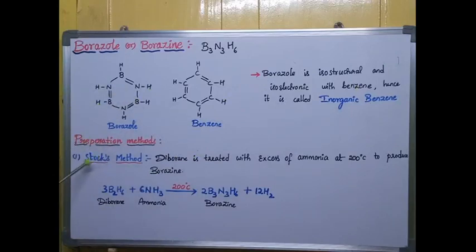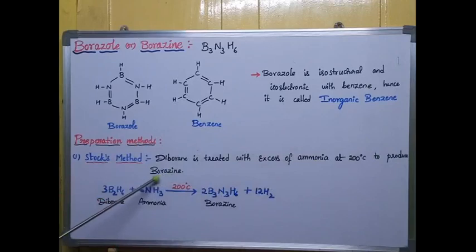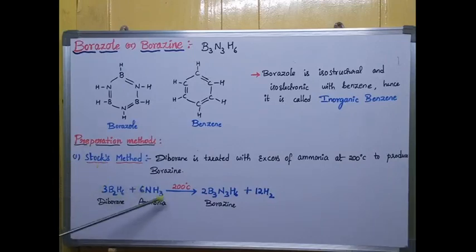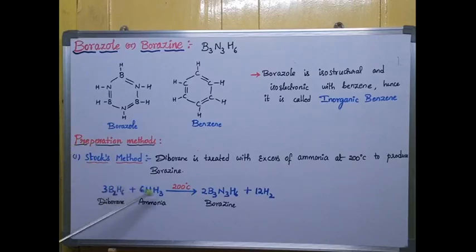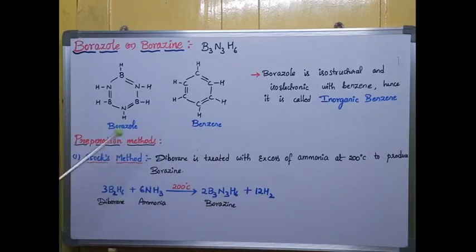Let us see the preparation methods. The first one is the Stock method. In Stock's method, diborane is treated with excess ammonia at 200 degrees centigrade to produce borazine. Three molecules of diborane react with six molecules of ammonia at 200 degrees centigrade, producing two molecules of borazole and twelve hydrogen molecules as a byproduct.